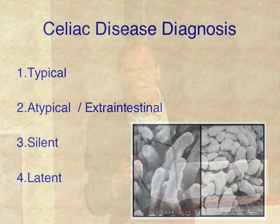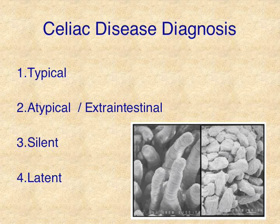We're now thinking of celiac disease in terms of four different types: the typical presentation, atypical — which is mostly extra-intestinal manifestations of celiac — the silent, and the latent.